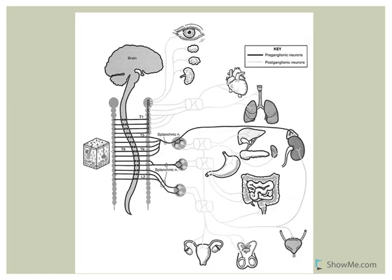When we talk about the autonomic nervous system, it involves pre-ganglionic neurons and post-ganglionic neurons. So it's a two-neuron system.